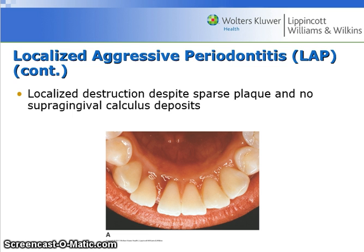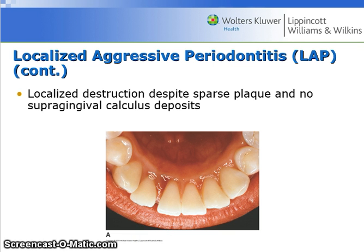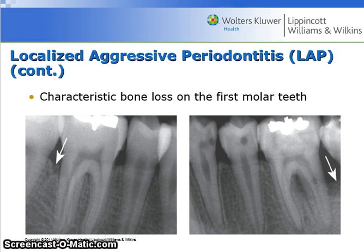This image shows localized destruction despite sparse plaque and no supragingival calculus deposits. This image shows the characteristic bone loss on the first molar teeth as indicated by the white arrows.